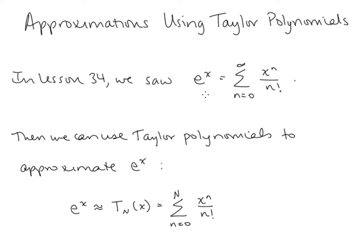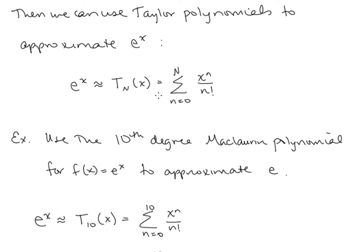In the last lesson, we saw that e to the x can be written as the series x to the n over n factorial, n going from 0 to infinity. To get an approximation to the function e to the x, we can use any of the finite Taylor polynomials. T sub N is the finite sum from n equals 0 to capital N of the same series. The higher order the polynomial, the better approximation you get to the original function.